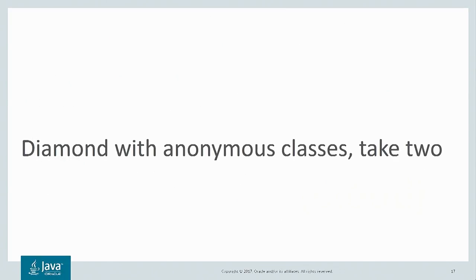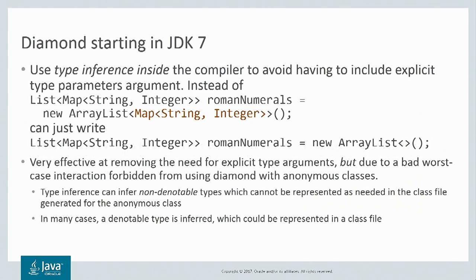Next, we'll talk about Diamond with anonymous classes. Diamond uses type inference inside the compiler to allow programmers to avoid having to type explicit type parameters when calling constructors. Back before Diamond, if you wanted to initialize your list of maps of strings to integers, you'd call new ArrayList and repeat those type arguments. But now you can just say new ArrayList<> and the compiler will infer the rest for you.